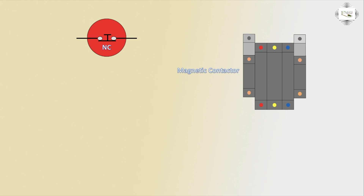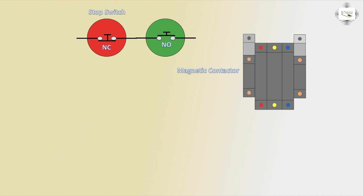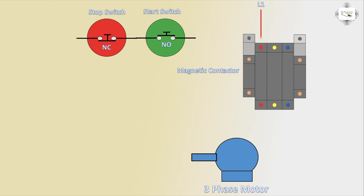The stop switching uses NC normally closed or E-star switch, and NO normally open E-star switch, for the three-phase industrial motor. First connection: L1 input, L2 input, L3 input — three-phase line input complete — going out to the industrial motor connection. First phase T1, second phase...